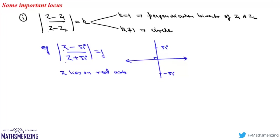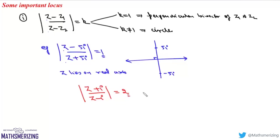Another example: |z + i| / |z - i| = 2. In this case the value of k is 2, which means this z will lie on a circle.